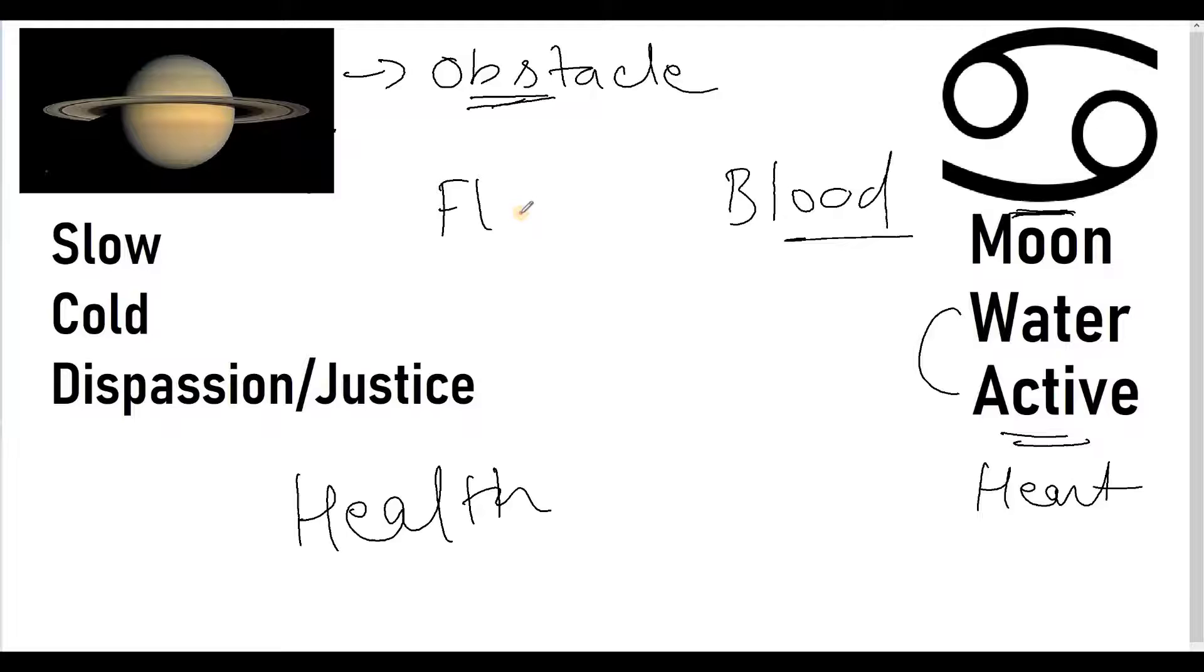So the first thing and the most important thing is that this placement of Saturn in Cancer is related with some or the other kind of obstacles in the flow of fluid across the body. Now that flow of fluid, mostly people think is related to blood, but there are many other fluids which are constantly flowing in the body. And the flow of the fluids is not just limited to the arteries and veins.